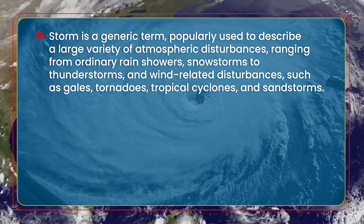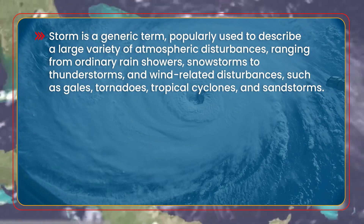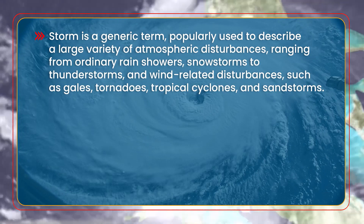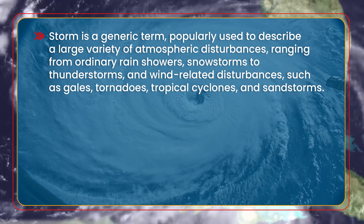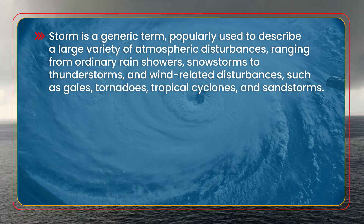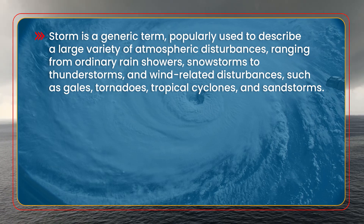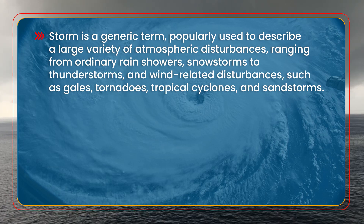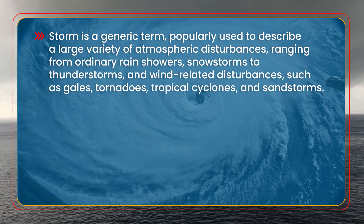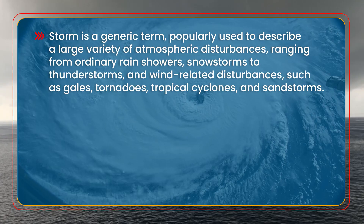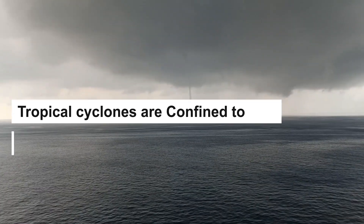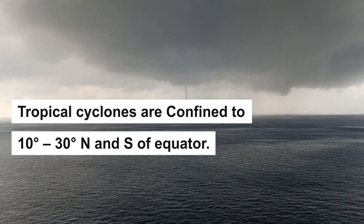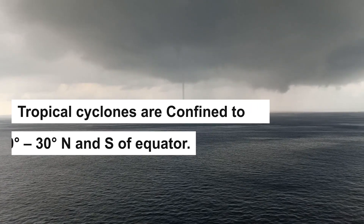Storm is a generic term, popularly used to describe a large variety of atmospheric disturbances ranging from ordinary rain, showers, and snow storms to thunderstorms, and wind-related disturbances such as gales, tornadoes, tropical cyclones, and sandstorms. Tropical cyclones are confined to 10 degrees to 30 degrees north and south of the equator.